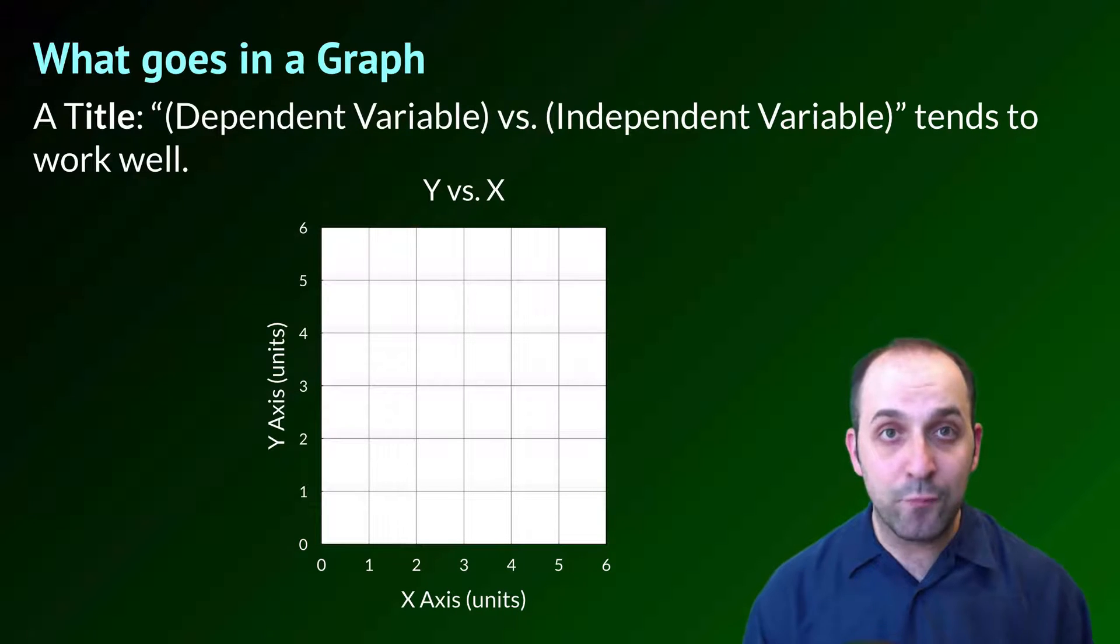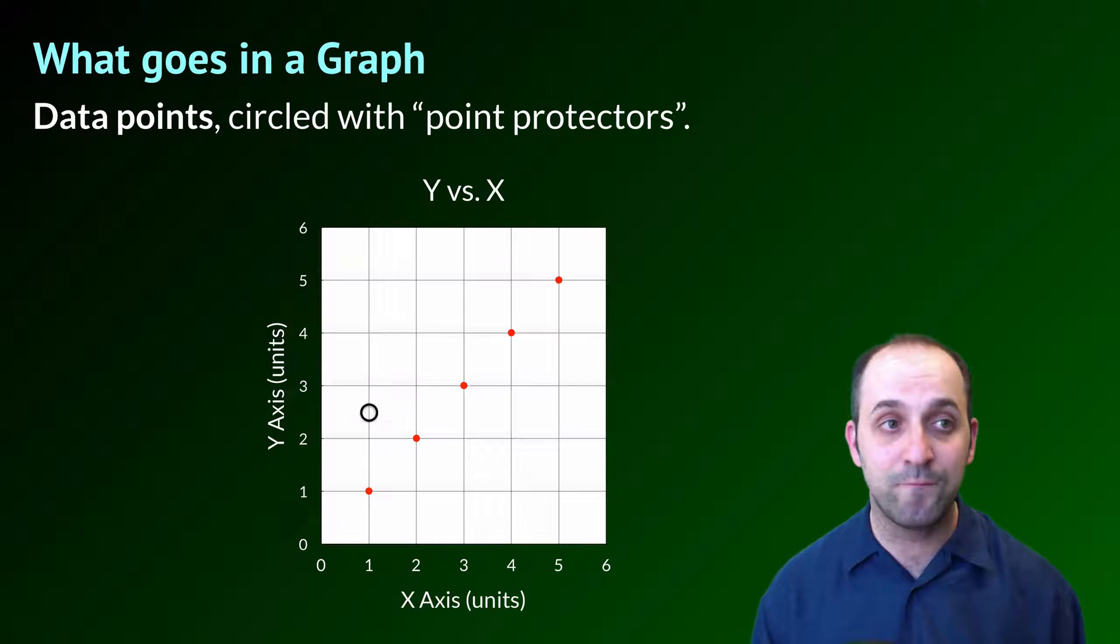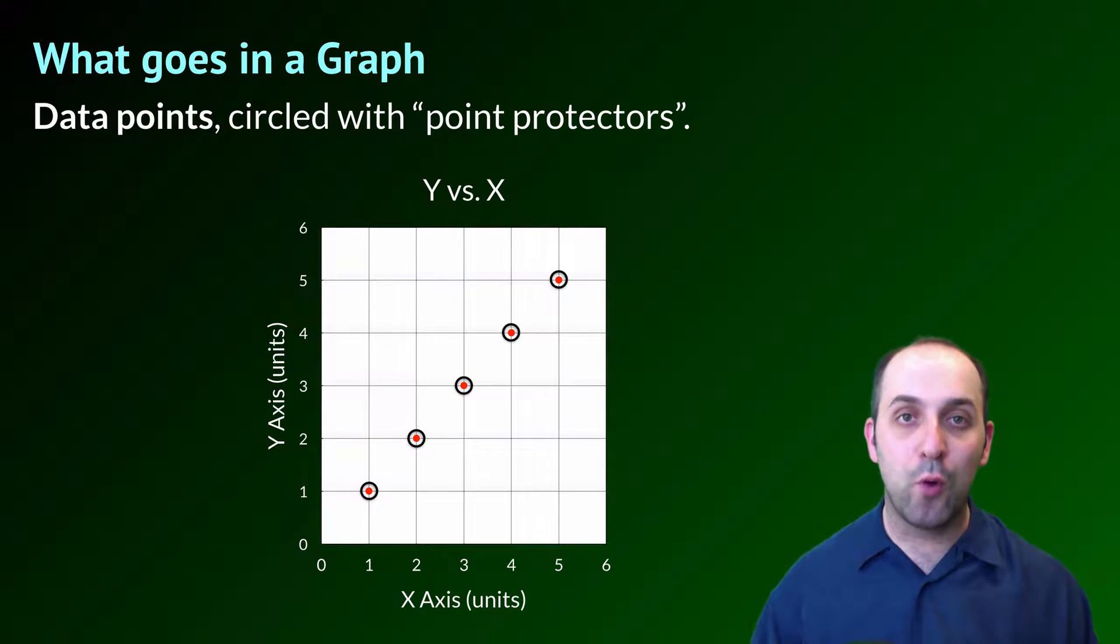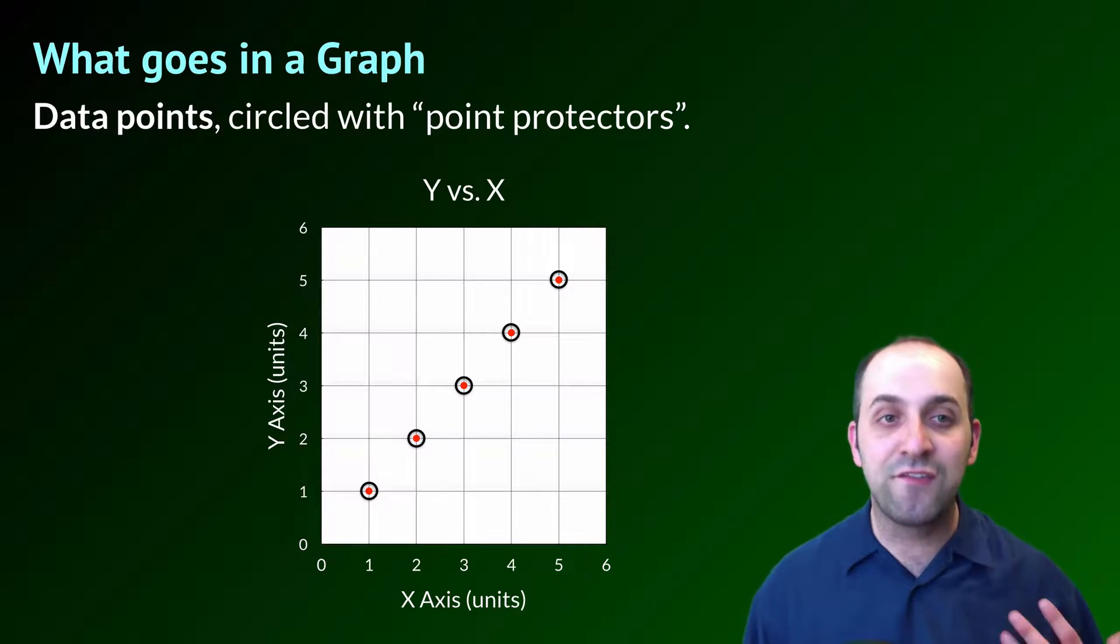We're going to give our graphs a title. You can be creative with your titles if you want, but if you're not creative, you can just go with dependent variable versus independent variable. That's totally fine and will work for almost every graph that you ever create, both in this class and in other classes. We're then going to plot our points. We're going to take care to make sure that we put our points in the correct places, and then we're going to circle our points with what we call point protectors. The regents is always going to ask you to do this, so I'd like you to get in the habit of doing it on things where we're going to graph in class, both on labs and in-class activities.